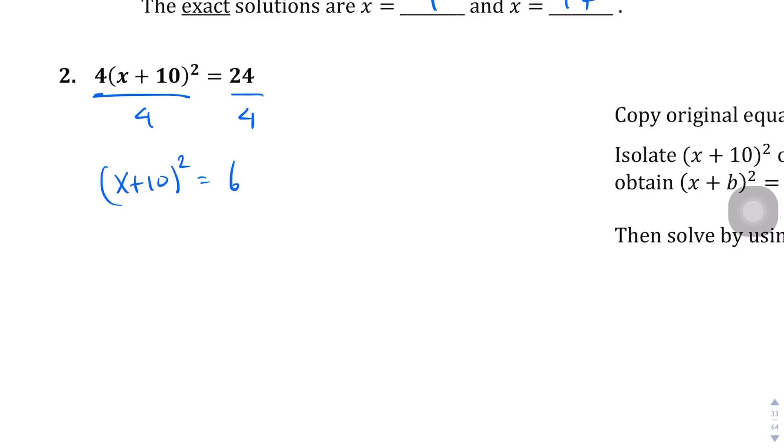And then we're going to square root both sides. And we get x plus 10 equals plus or minus square root of 6. And so, again, this is going to branch off into two different directions. We're going to get x plus 10 equals square root of 6, and x plus 10 equals negative square root of 6.